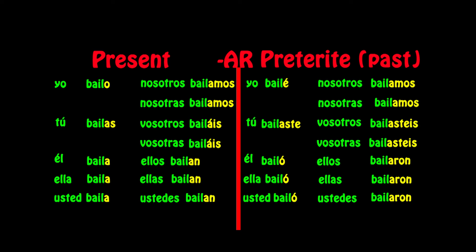In the preterite past: yo bailé, tú bailaste, él bailó, ella bailó, usted bailó, nosotros bailamos, nosotras bailamos, vosotros bailasteis, vosotras bailasteis, ellos bailaron, ellas bailaron, ustedes bailaron.